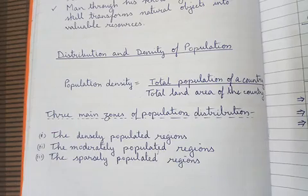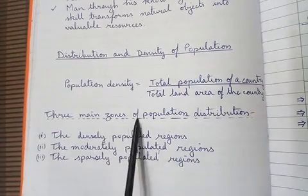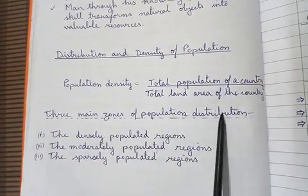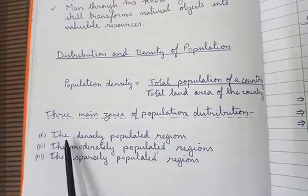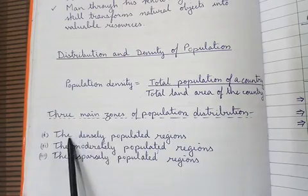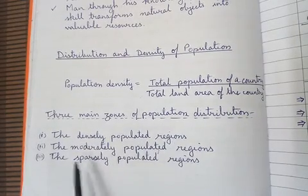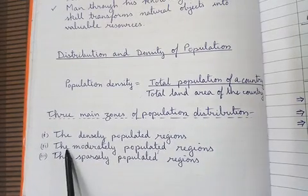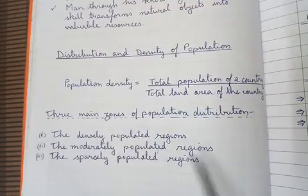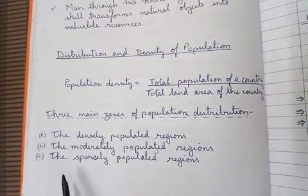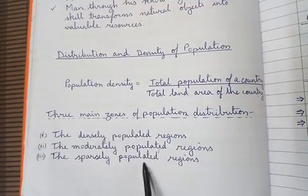So we have seen here about the three main zones of population distribution. We have discussed the densely populated regions of the world. Second, we have seen the moderately populated regions. And third, we have seen the sparsely populated regions.